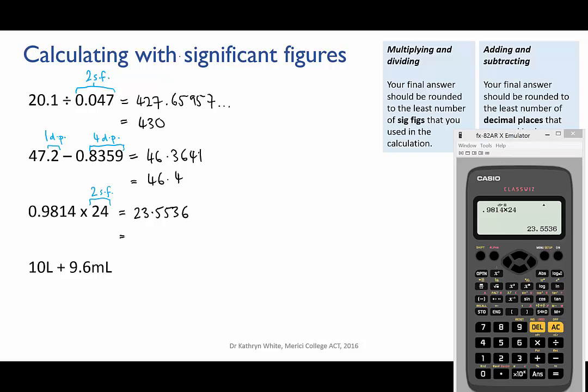So our final answer must also be rounded to two sigs, which gives us 24. Now does that seem a bit weird? We've multiplied 24 by something that's not one and yet we still ended up with 24.